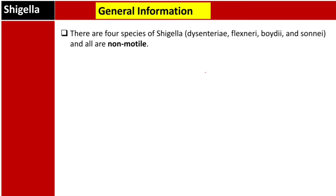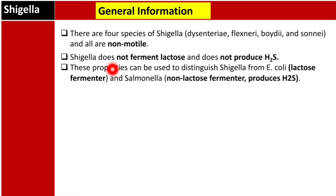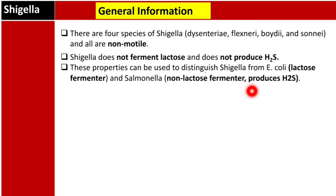There are four main species of Shigella: Shigella dysenteriae, Shigella flexneri, Shigella boydii, and Shigella sonnei. There are other species but these are the four main important ones. All of them are non-motile. Shigella does not ferment lactose and does not produce hydrogen sulfide. These properties can be used to distinguish Shigella from E. coli, which ferments lactose, and from Salmonella, which is a non-lactose fermenter but produces hydrogen sulfide.